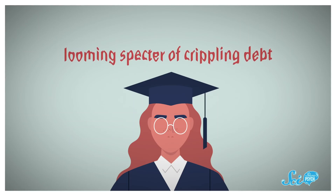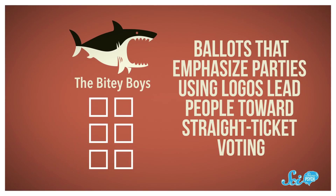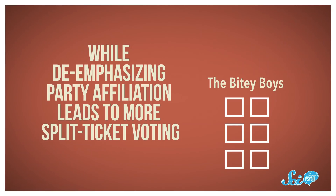Even ballot designs can reinforce identification with a given group. Ballots that emphasize parties using logos lead people toward straight-ticket voting, while deemphasizing party affiliation leads to more split-ticket voting. Similarly, studies suggest using candidate photos on ballots may prime us to think about the races or ethnicities we identify with, and thereby nudge us to vote accordingly.